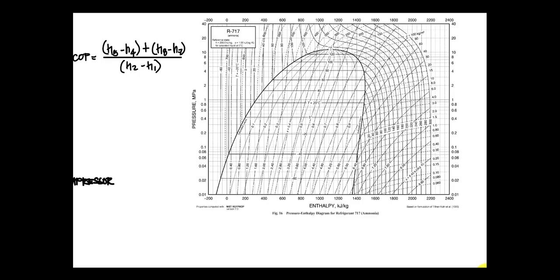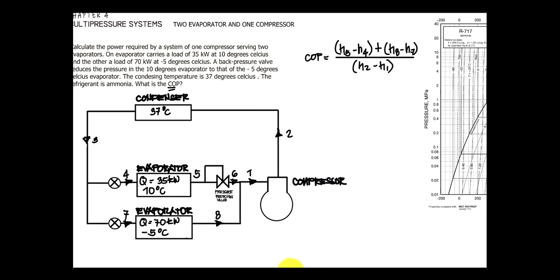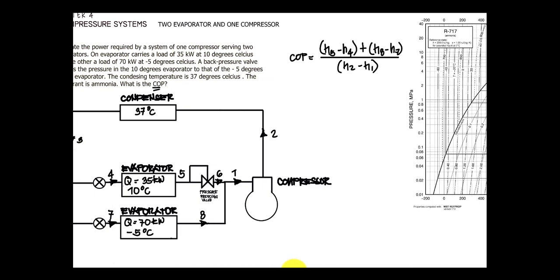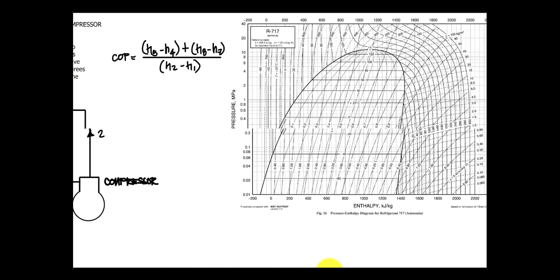What I have here is a pressure-enthalpy diagram for refrigerant R-717, which is ammonia — the refrigerant used in this cycle. We will plot the cycle properties on this diagram to draw the cycle process.